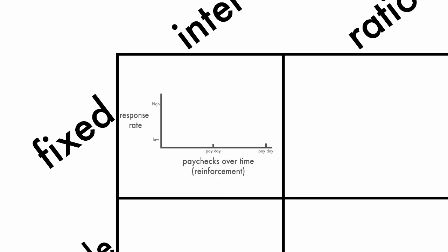Fixed Interval schedules tend to produce overall response rates that are low and that increase as the time for reinforcement gets closer. This is called a scalloped response pattern.